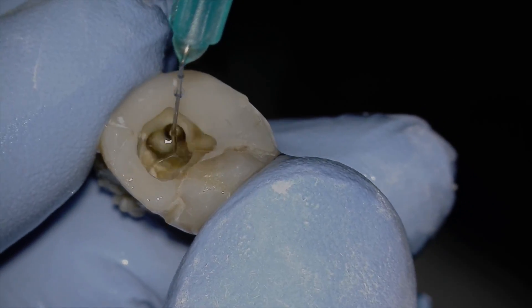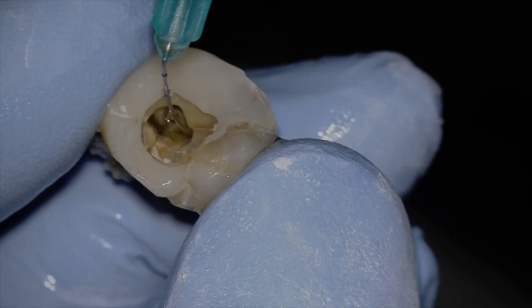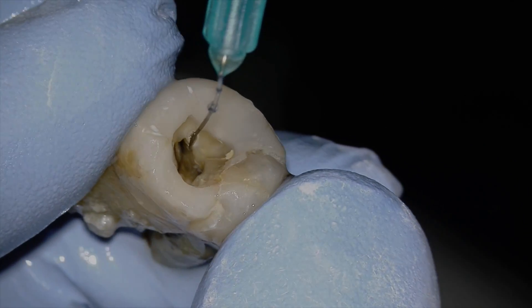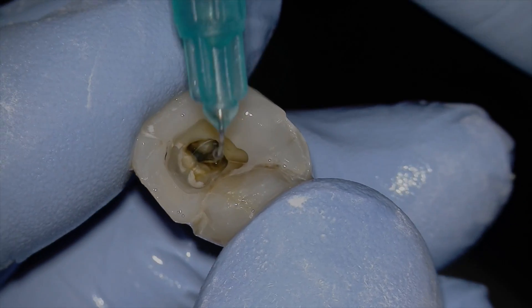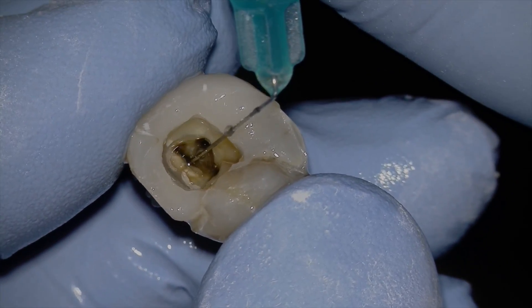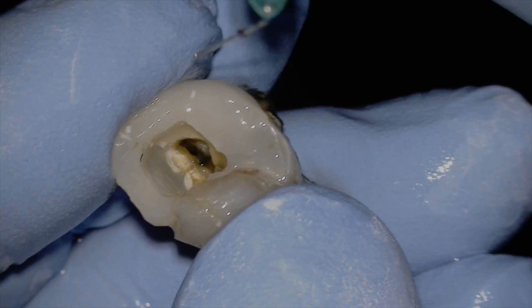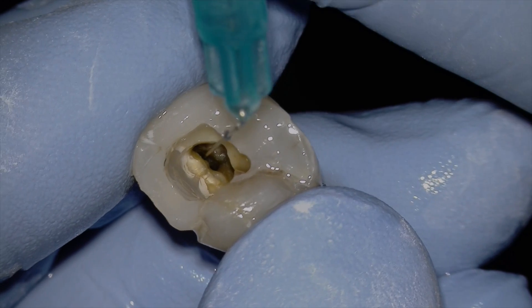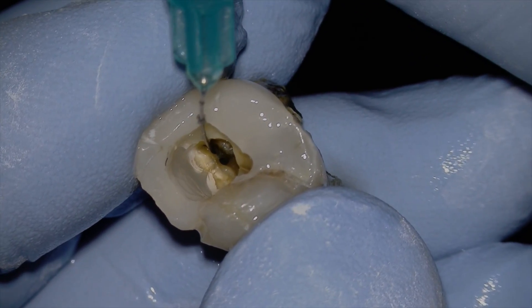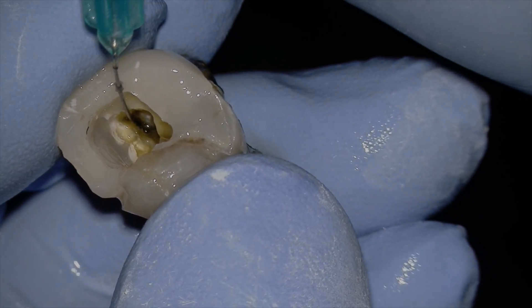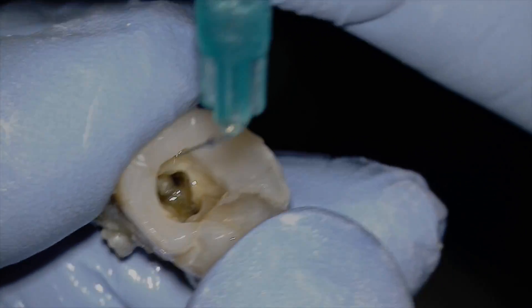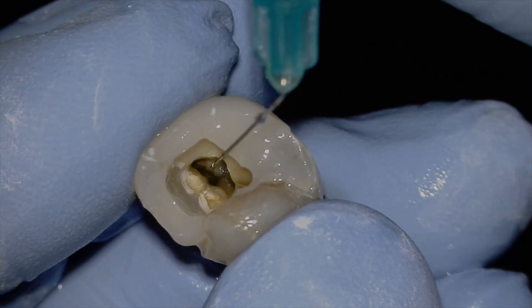So the key to great endo is irrigation. Like lots and lots of irrigation. And the key to reproducible working lengths is to not have a lot of irrigant in the pulp chamber. And even less in the canal. So one of the tips that I do before I go to get my apex locator reading is to use the syringe just to suction out. So I pull back on the plunger to suction out most of the irrigant out of the pulp chamber, but also the orifices in the canals.